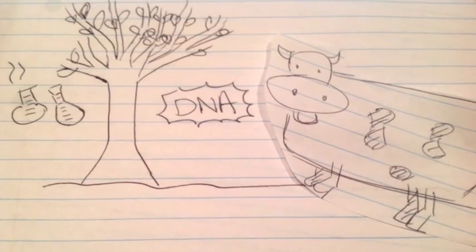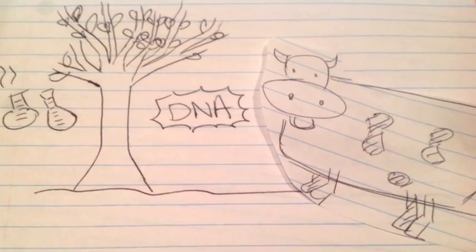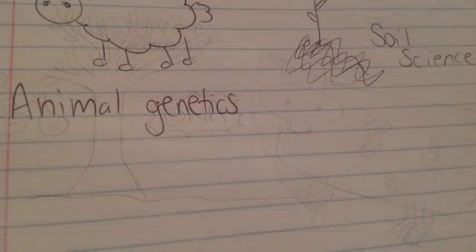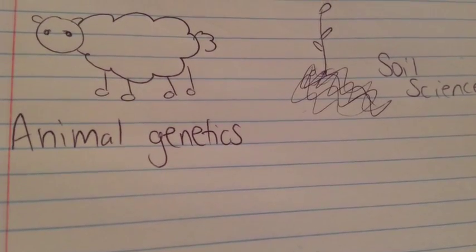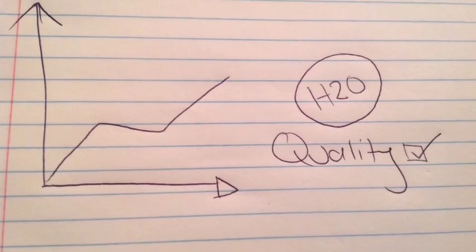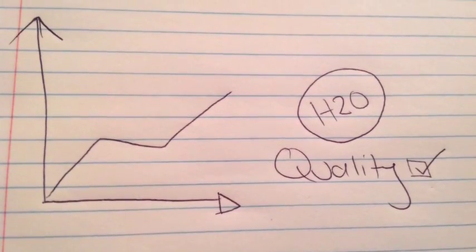But what does an agricultural scientist do? An agricultural scientist could work in areas such as plant breeding and genetics, farming sciences, animal genetics, soil science, molecular biology, statistics, water quality and biometrics to name a few.